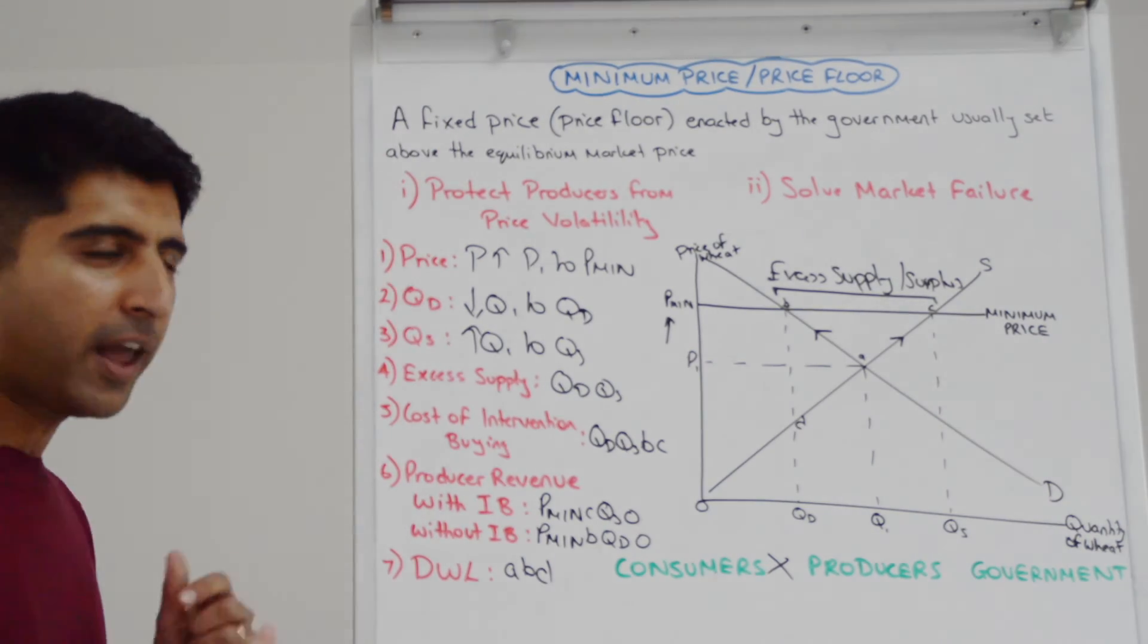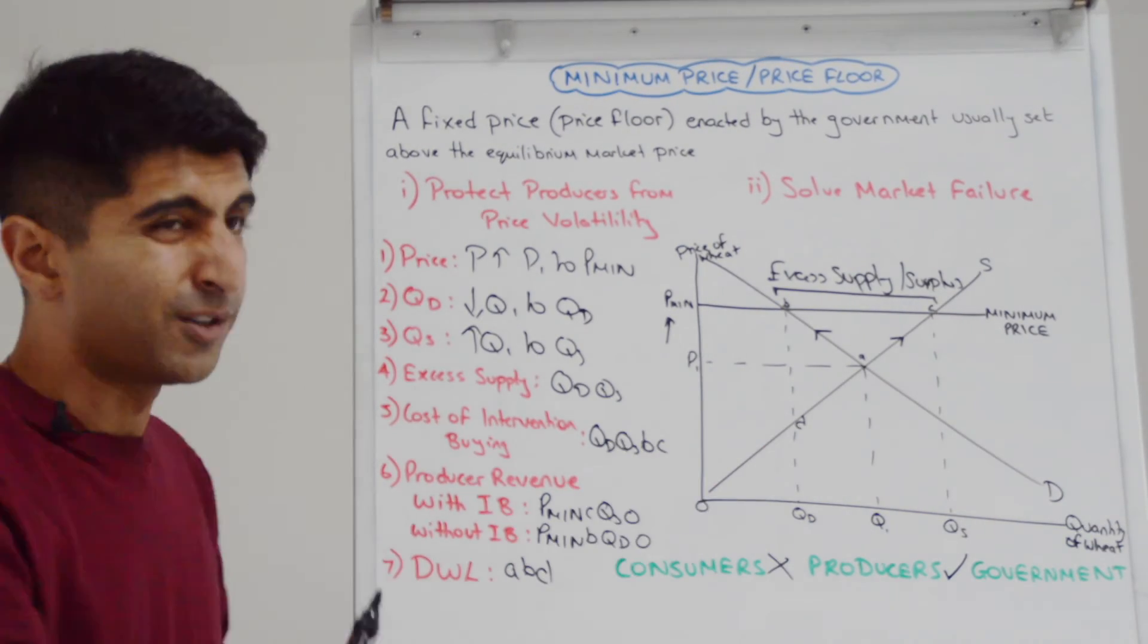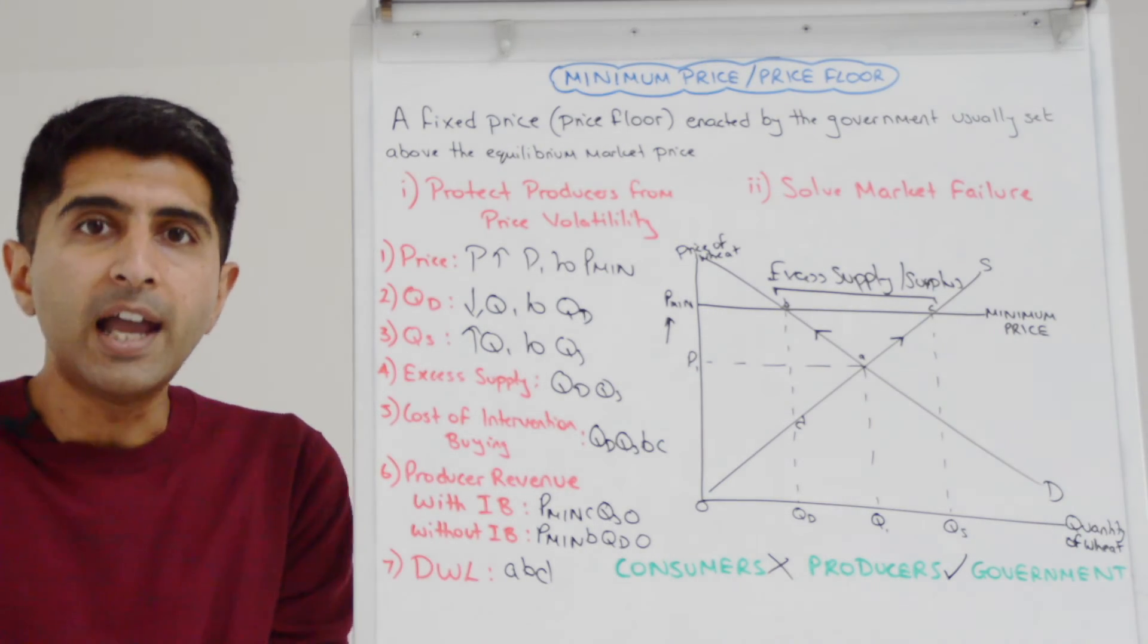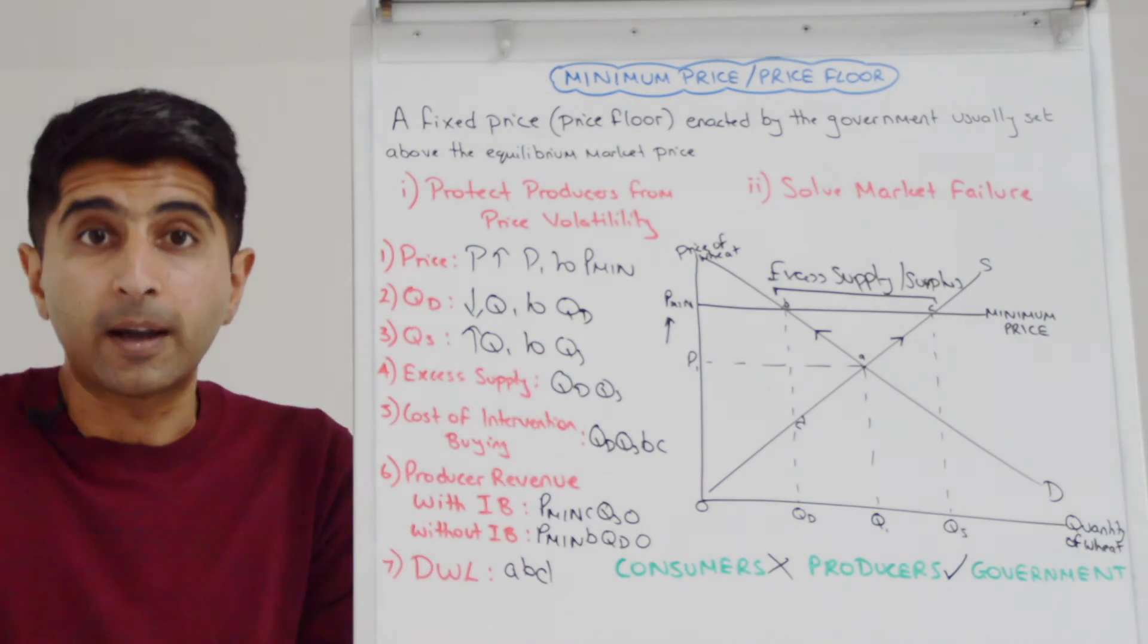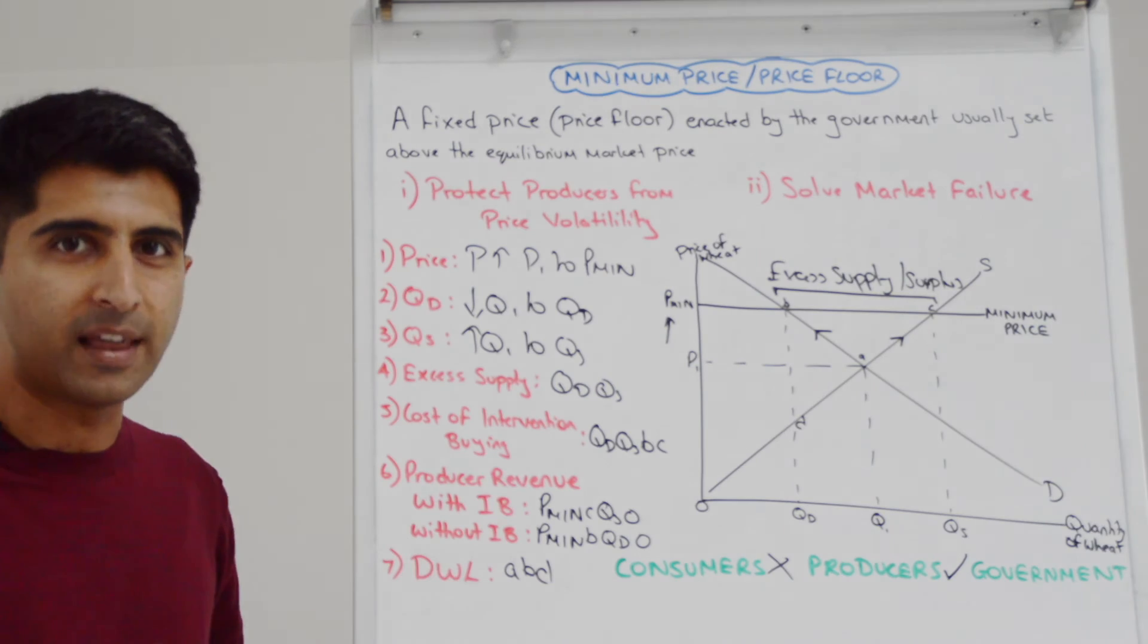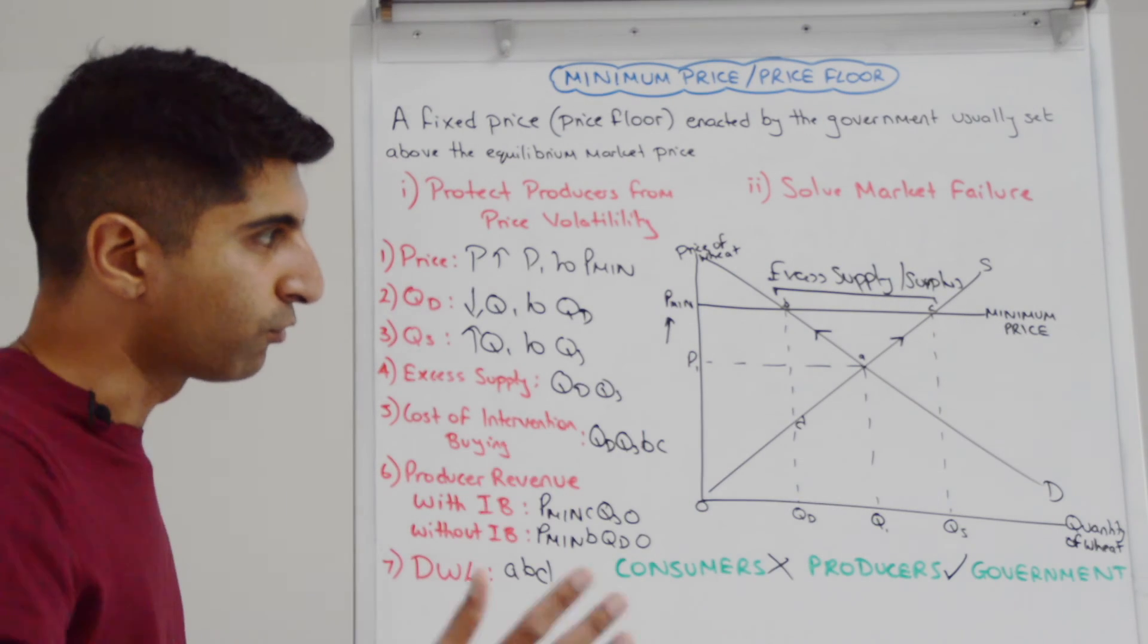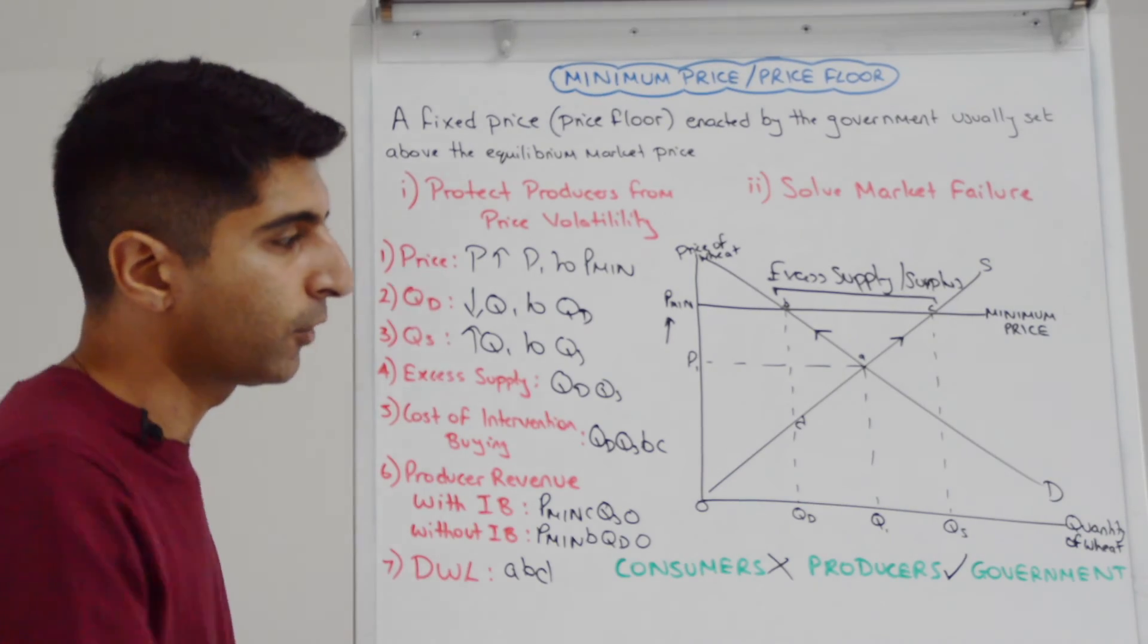What about for producers? Well, their effect depends heavily on whether there is intervention buying or not. If there is, we can see producers are loving it. They're getting a huge increase in revenue, an increase in producer surplus, but also they survive in the market. If there is price volatility and prices fall, producers are completely protected by this minimum price, which is good for them, their livelihoods, their living standards. But if there is no intervention buying, it's hard to say overall if they're winning or not, whether their revenues rise or not. So very dependent on whether there is intervention buying or not.